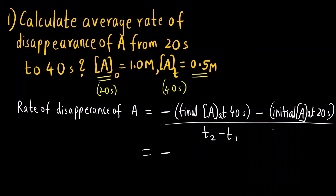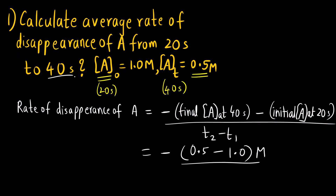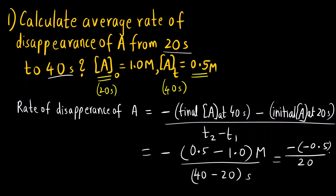Substituting the values: this will be minus of (0.5 minus 1) molar, divided by (40 minus 20) seconds. So that gives us minus of (−0.5) divided by 20. The minus into minus becomes plus, which is why we add the negative sign — the answer comes out to be 0.025 molar per second.